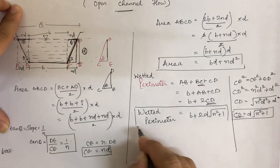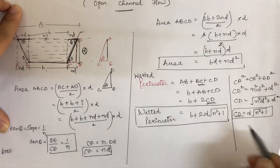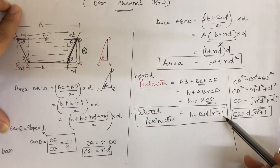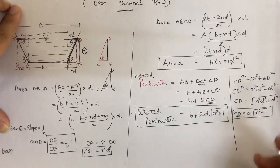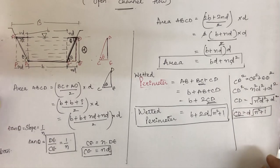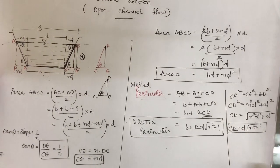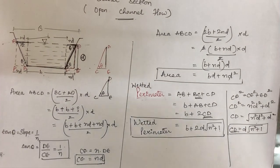So in this way, you can use these formulas to calculate the area as well as the wetted perimeter in open channel flow problems. Thank you.